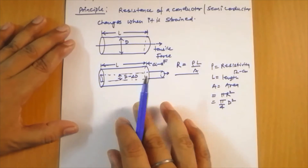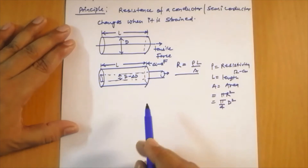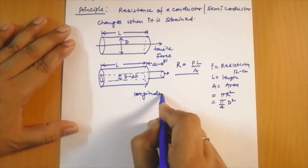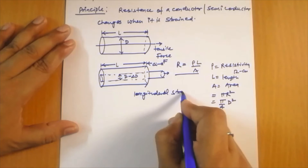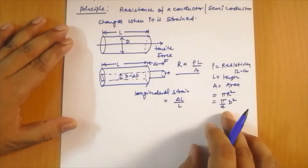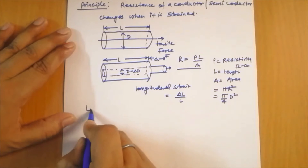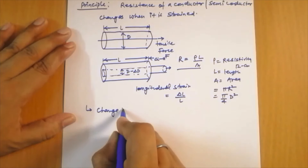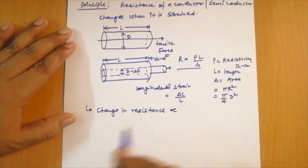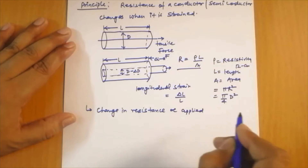The longitudinal strain is given by delta L divided by L. Because of this longitudinal strain, the resistance will change, and this change in resistance is directly proportional to the applied strain. This is the basic principle of the strain gauge.